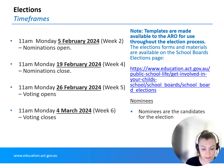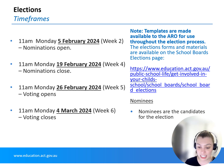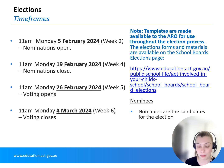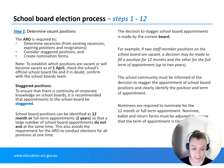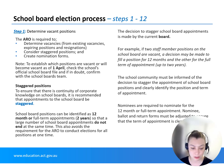For key dates for 2024, the directorate publishes an annual calendar of key dates for each stage of the selection process on the school board's webpage. This is published at the end of the year, ready for the following year, and should be used in conjunction with the school board's handbooks. Nomination forms can be found on the school board's page on the education website. Templates have been created for each stage of the process and a process map is available on the school board's webpage.